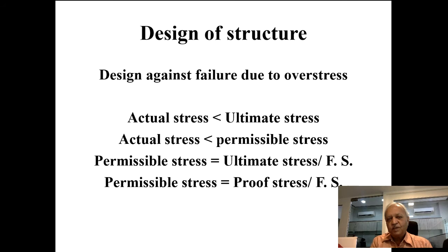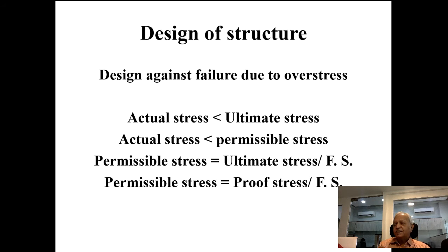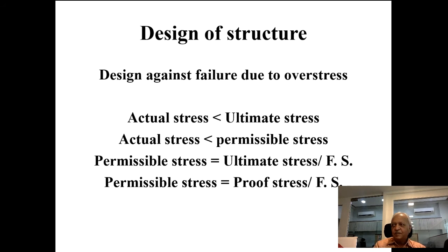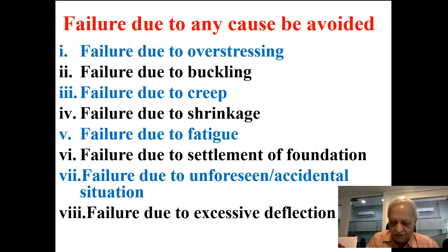The design philosophy requires calculating actual stress in a member — for example, for axial force: checking if it is less than ultimate stress or permissible stress depending on the method (working stress or limit state). Permissible stress may be derived from ultimate stress divided by a factor of safety, or for tor steel using 0.2% proof stress with a factor of safety, or for mild steel from yield stress with a factor of safety.